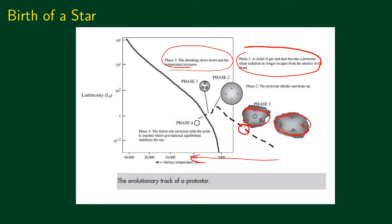The change in luminosity is not straightforward: the luminosity first increases slightly, then decreases, before settling on the main sequence. This is the complete evolutionary track of a protostar with one solar mass.